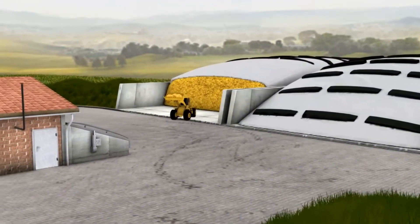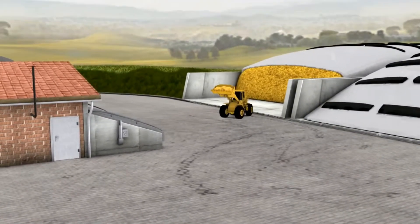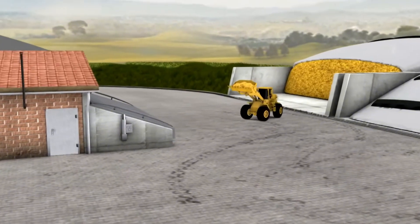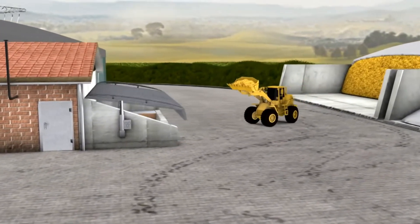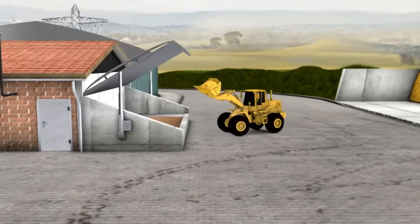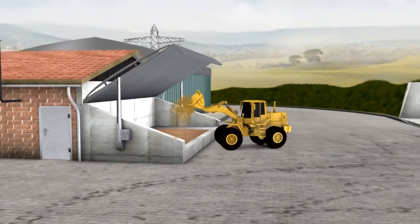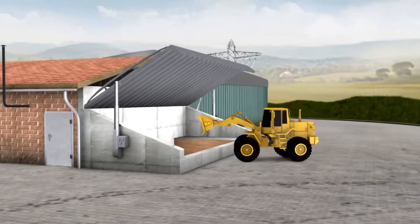Maize silage, among other things, is used as input material in this plant. The maize is supplied to the biogas plant through an acceptance bunker using a tractor loader. The bunker is designed with a storage capacity of two days.